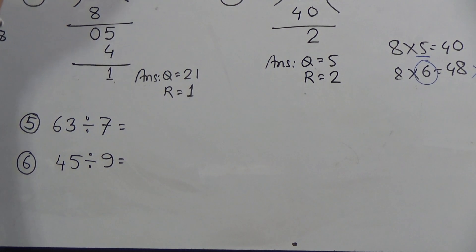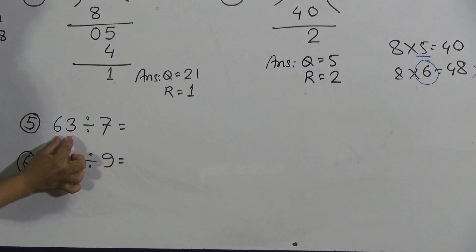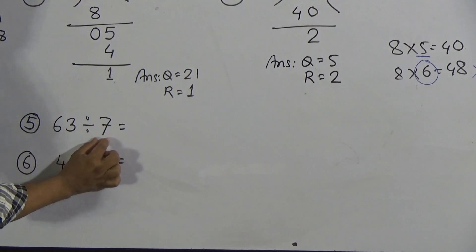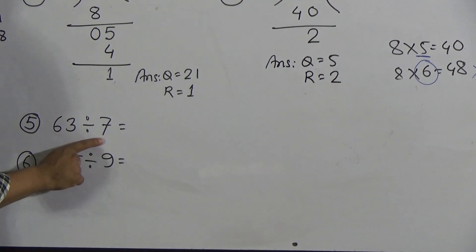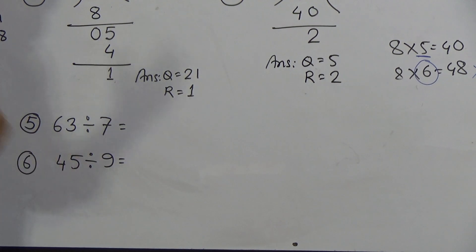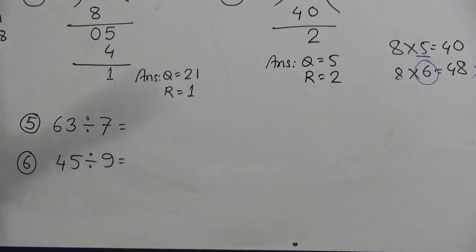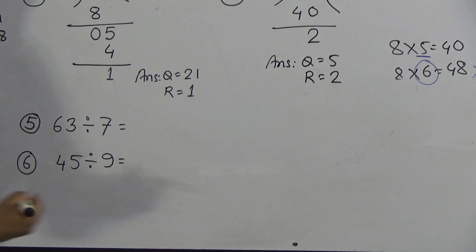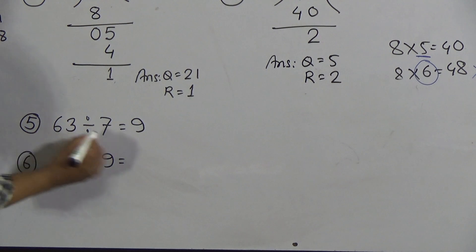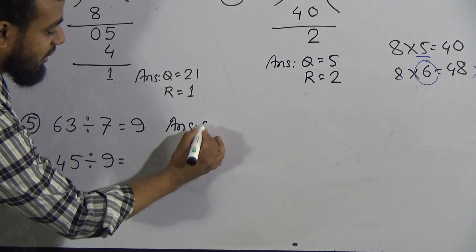Now the last two questions — numbers 5 and 6 — are written horizontally, whereas all previous questions were vertical. Question number 5: 63 divided by 7. Here 63 is the dividend and 7 is the divisor. Count the times table of 7 to find 63: 7 ones are 7, 7 twos are 14 ... 7 nines are 63. So 7 nines are 63. The answer is Q = 9.